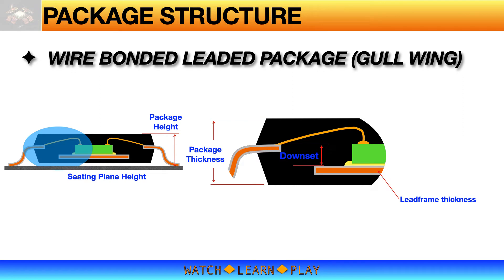You will notice that the lead frame has a downset — that is, the die attach pad is actually lower for gull-wing type packages. This gives more vertical space for the die and wire. The green color in the illustration is the die. Die thickness varies between manufacturers, or even between devices from the same manufacturer. In general, it is cheaper and easier to use thicker die — the thicker the die, the less prone it is to breakage and the easier it is to handle compared to thinner die. Raw wafers are roughly about 24 mils or 0.6 millimeters thick; for standard packages, wafers are thinned to about 10 to 20 mils thick.